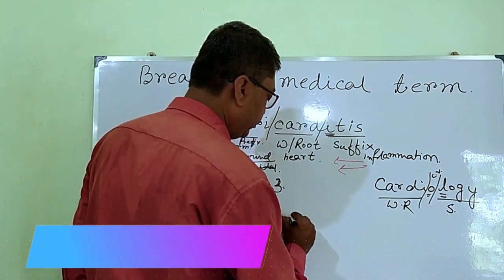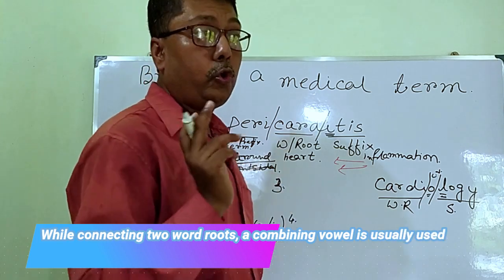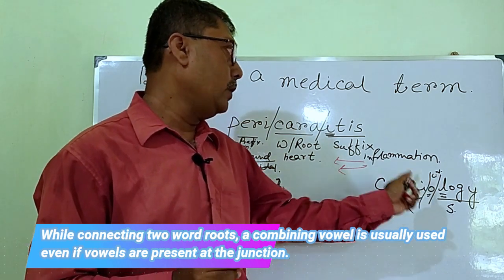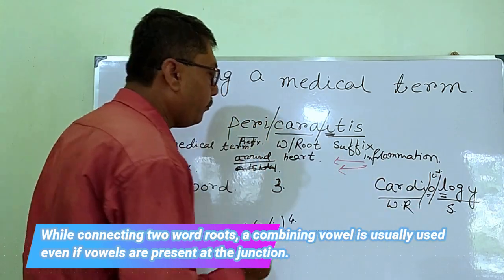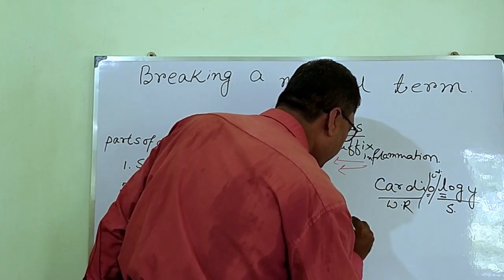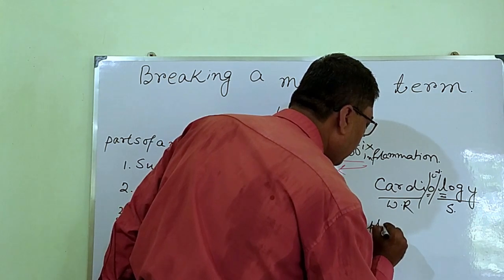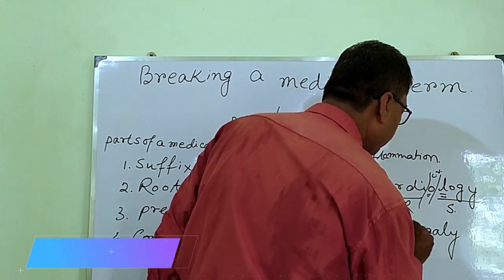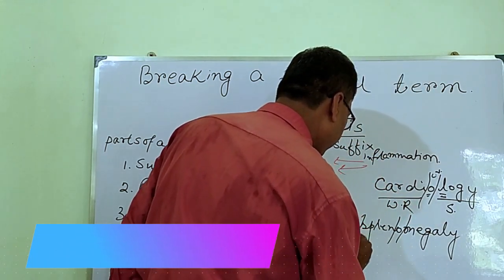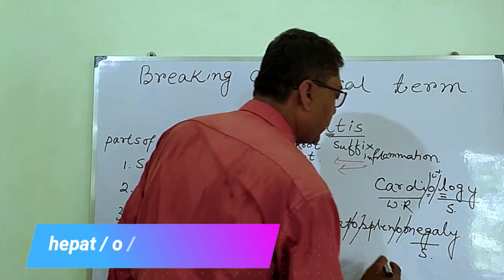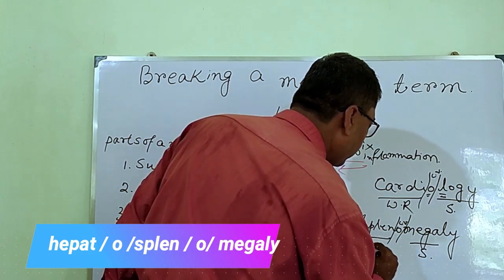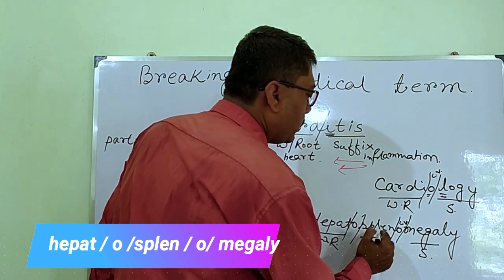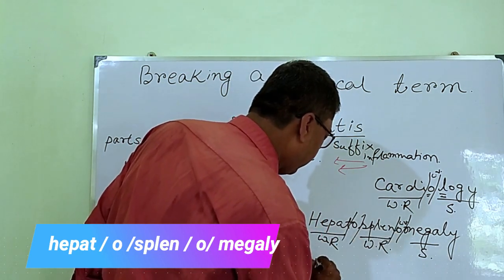Rule number four: sometimes two or more word roots are connected with the help of a combining vowel. For example, 'hepato-spleno-megaly' — 'hepato' is the combining form of word root 'hepat', and 'spleno' is another word root. The combining vowel joins them together.